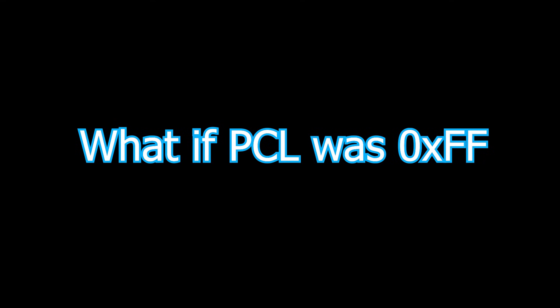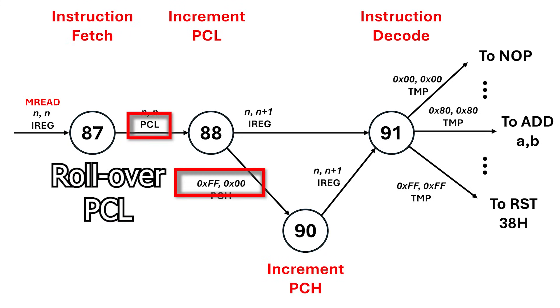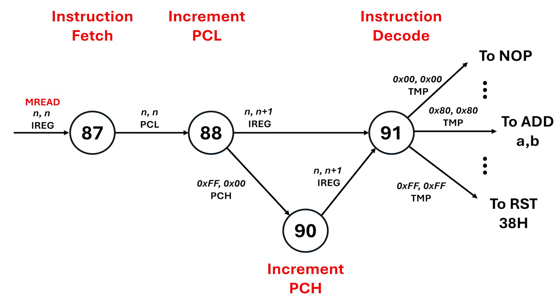But, what happens when PCL was already at 255, or FF in hex? Now, we've got to roll over PCL to 0 and increment PCH, the high byte of the program counter. That's normally by passing through an extra state, state 90, which only triggers once every 256 instructions. Simple enough, right?